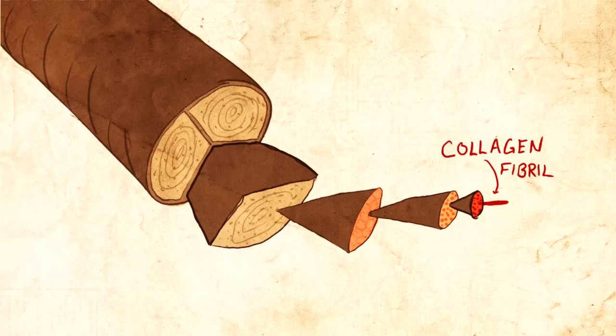If you have a healthy tendon, it looks a bit like this, with these dense arrays of collagen fibers all parallel to each other. This structure keeps them strong. And opposite of healthy tendons are injured tendons, and tendon injuries are known as tendinopathies.